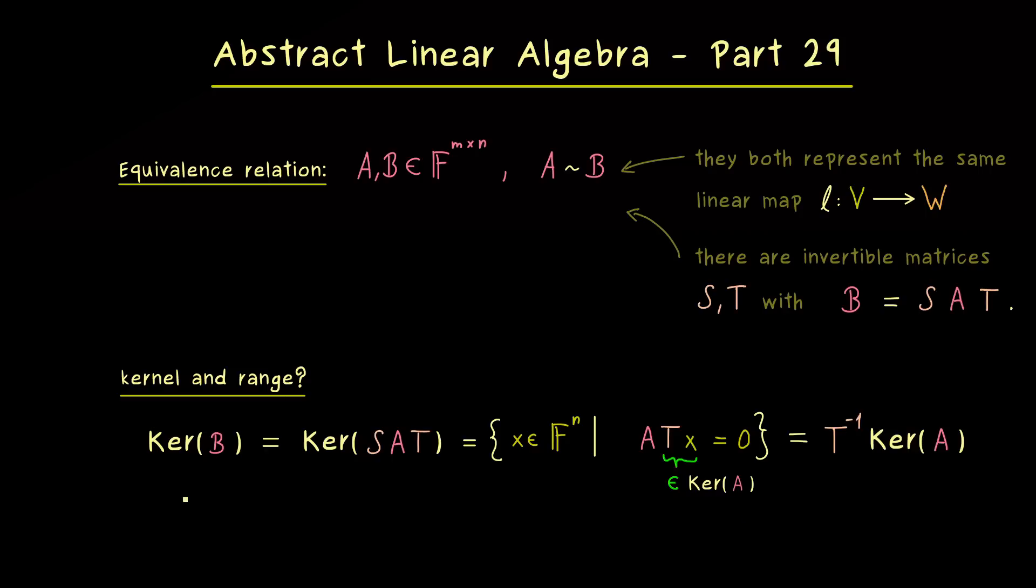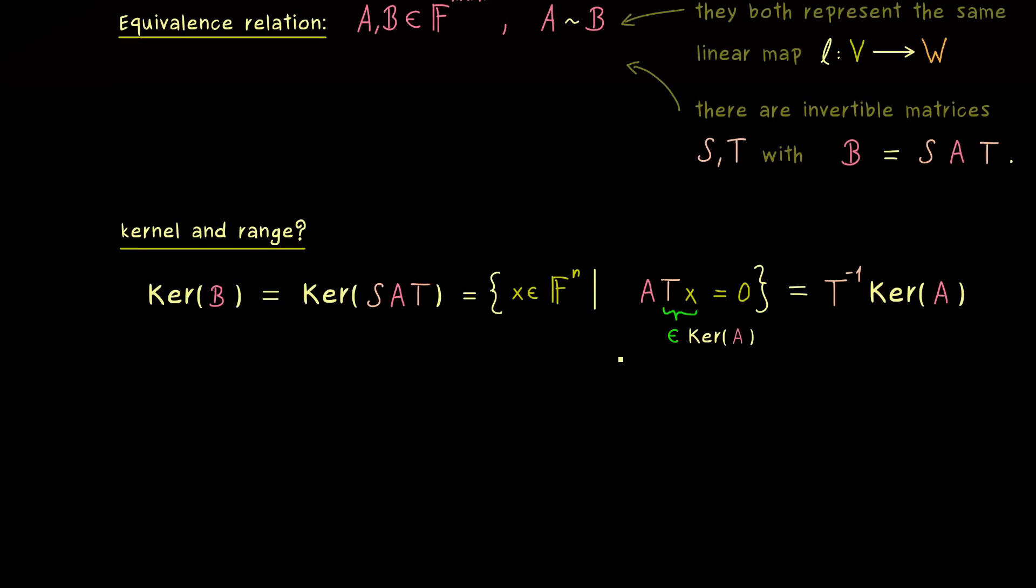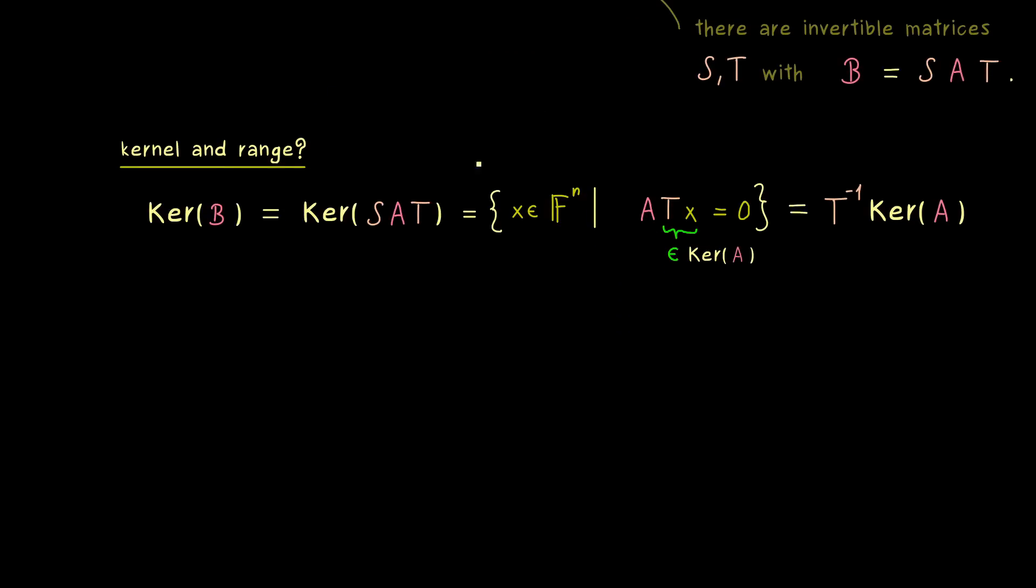So in short we could say the kernel of B is T inverse the kernel of A. Or vice versa, the kernel of A is T times the kernel of B. Hence by this formula we have the conclusion that the kernel could definitely change under our equivalence operation.